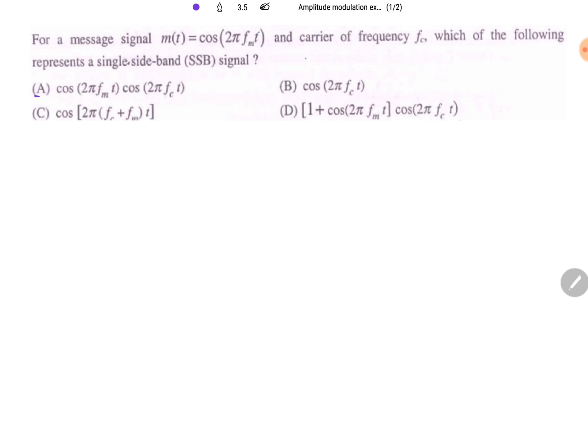If you see first equation, that is the equation of DSBSC, the carrier signal into mt, it means it is DSBSC. Now if you see second option B, that is just a carrier signal.